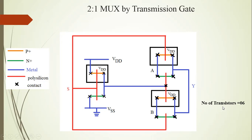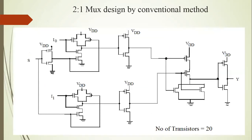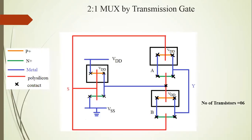This 2-to-1 MUX designed by transmission gate uses 6 transistors. In comparison, the 2-to-1 MUX designed by the conventional method using only transistors requires 20 transistors. Using a transmission gate, the number of transistors is 6. This is the advantage of using transmission gates: when you design a multiplexer or any other circuit, the number of transistors is reduced.